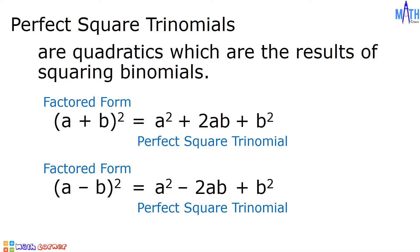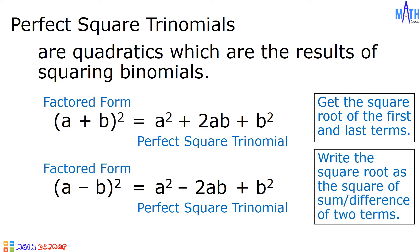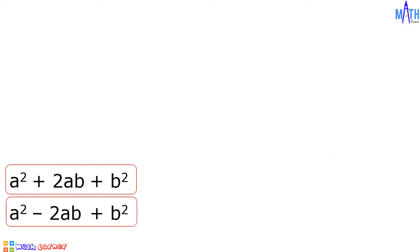To factor perfect square trinomials, all we have to do is get the square root of the first and last terms, and write the square root as the square of the sum or difference of two terms. We will consider these patterns of perfect square trinomials. Let us have some examples.